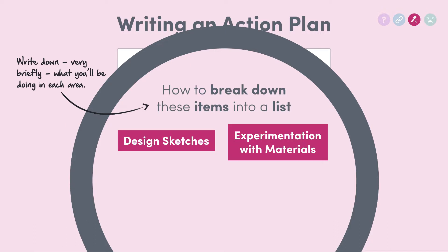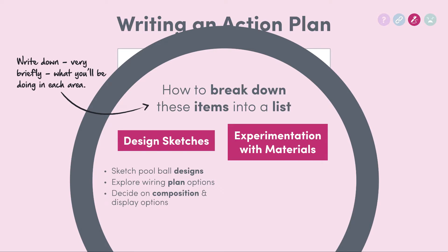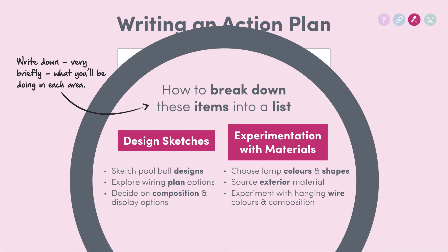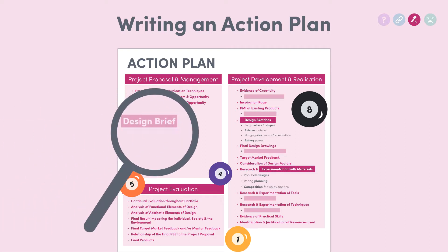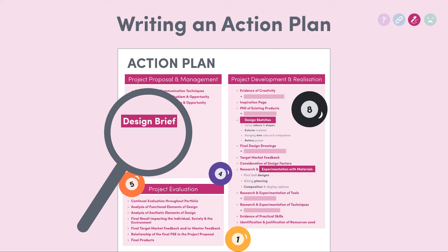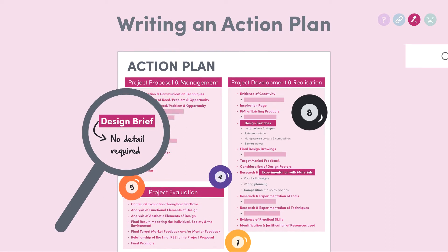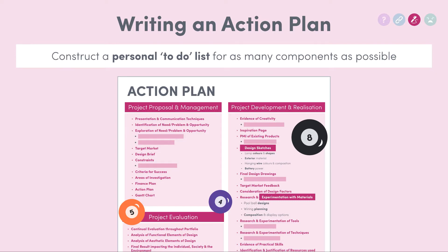Let's look at two random components: design sketches and experimentation with materials. For design sketches you might list pool ball designs, wiring planning, composition, and display options. For experimentation with materials you might list different lamp colors and shapes, exterior material, hanging wire, colors, composition, style, and battery power for display. Now I'm not going to say that every single item on our action plan needs this level of additional detail — for example, we've all written our design briefs, and that's only a couple of sentences, so that item wouldn't need the extra details. But really try to construct a personal to-do list for as many important components as you can.